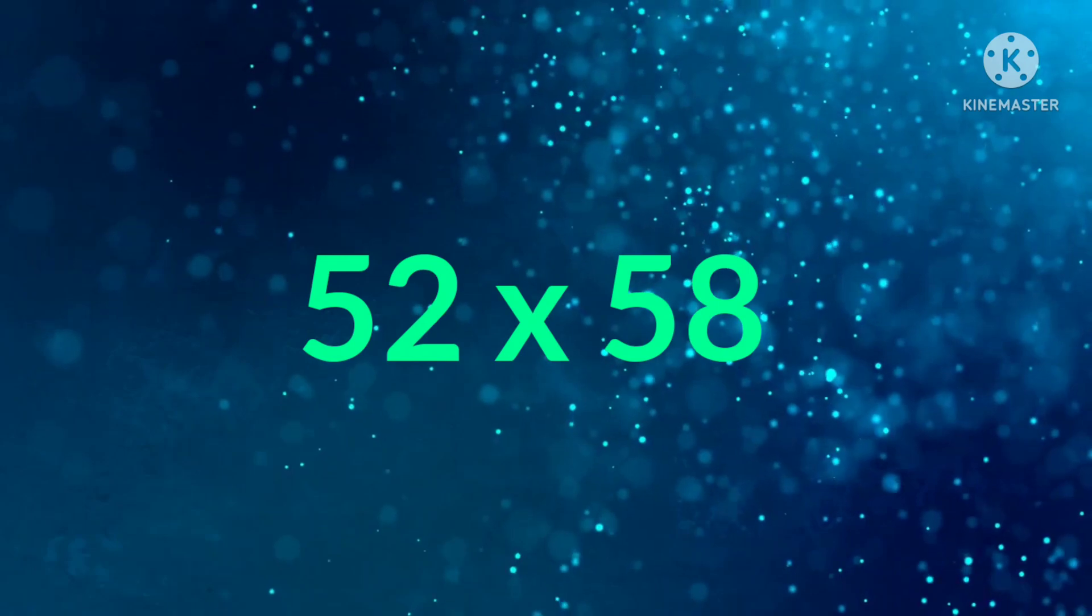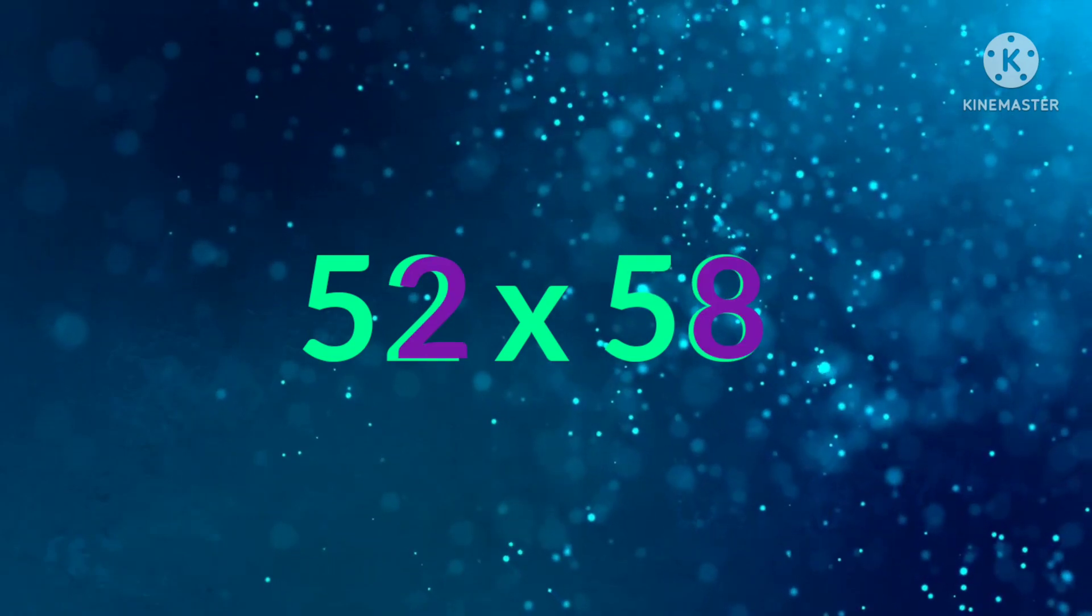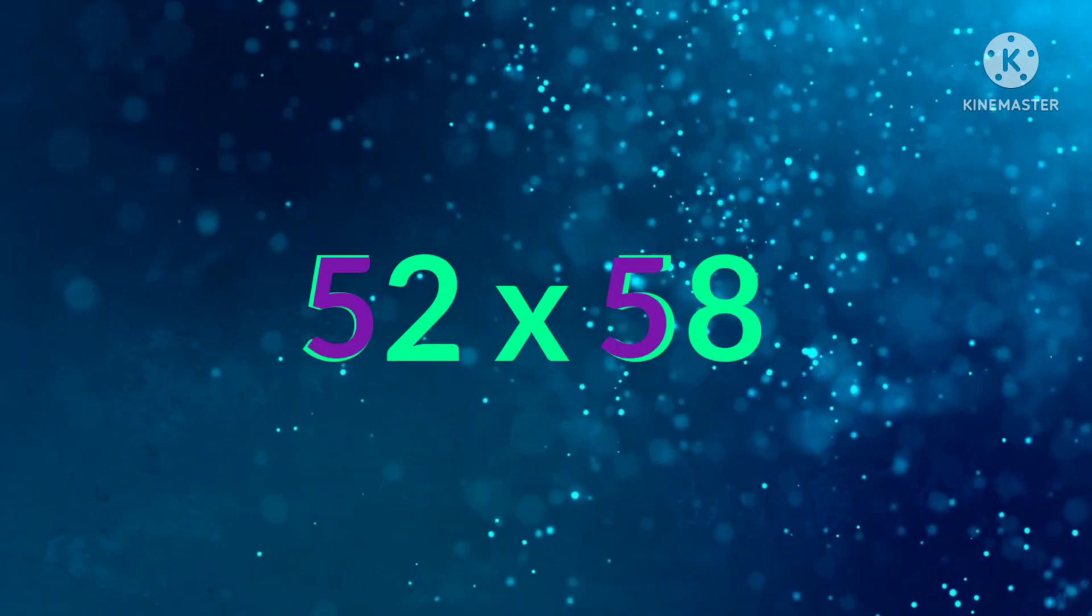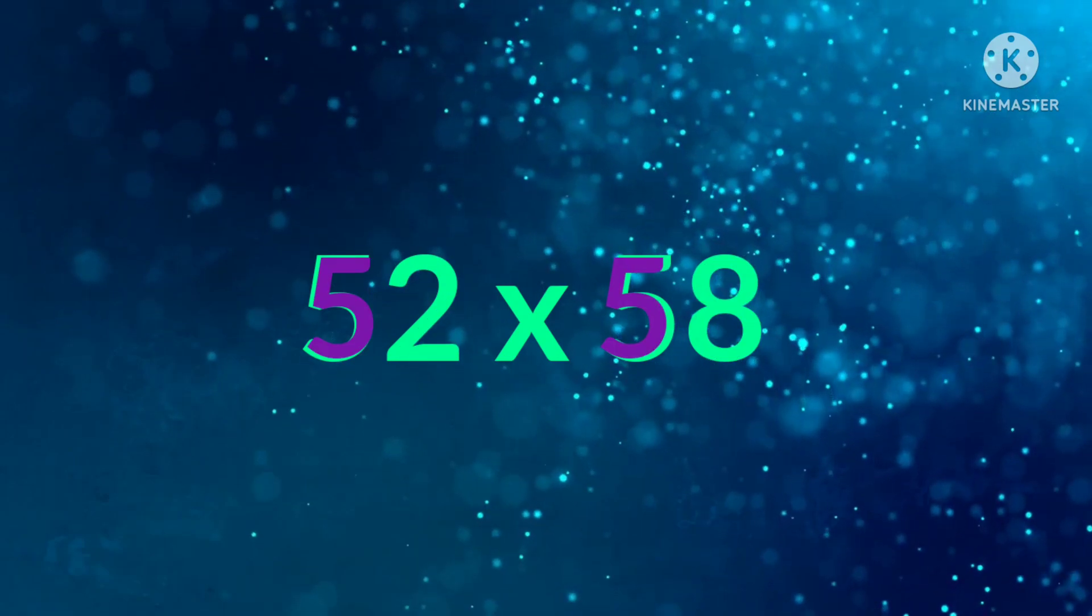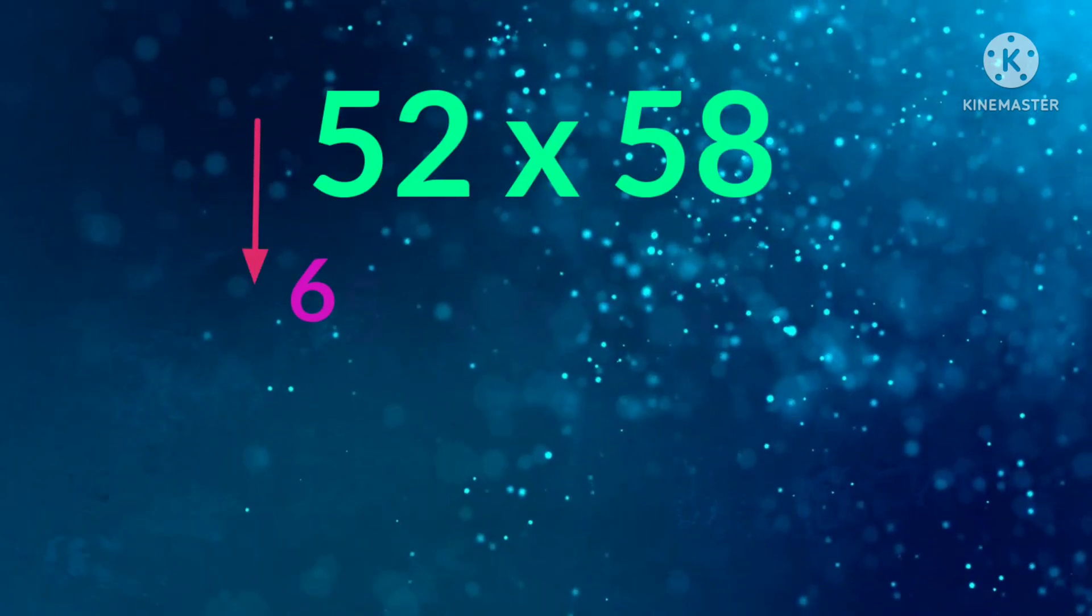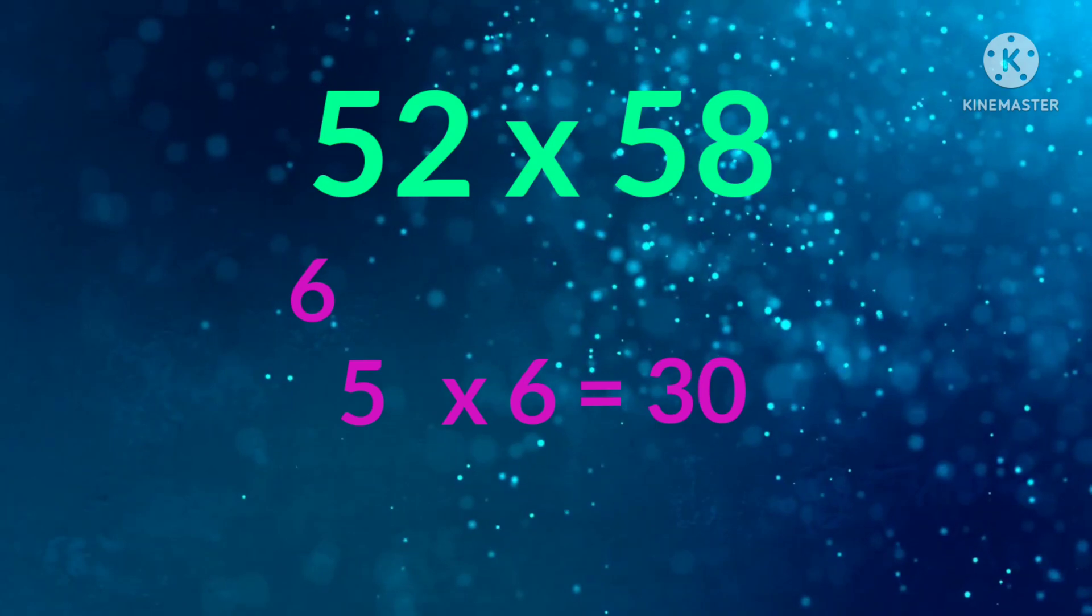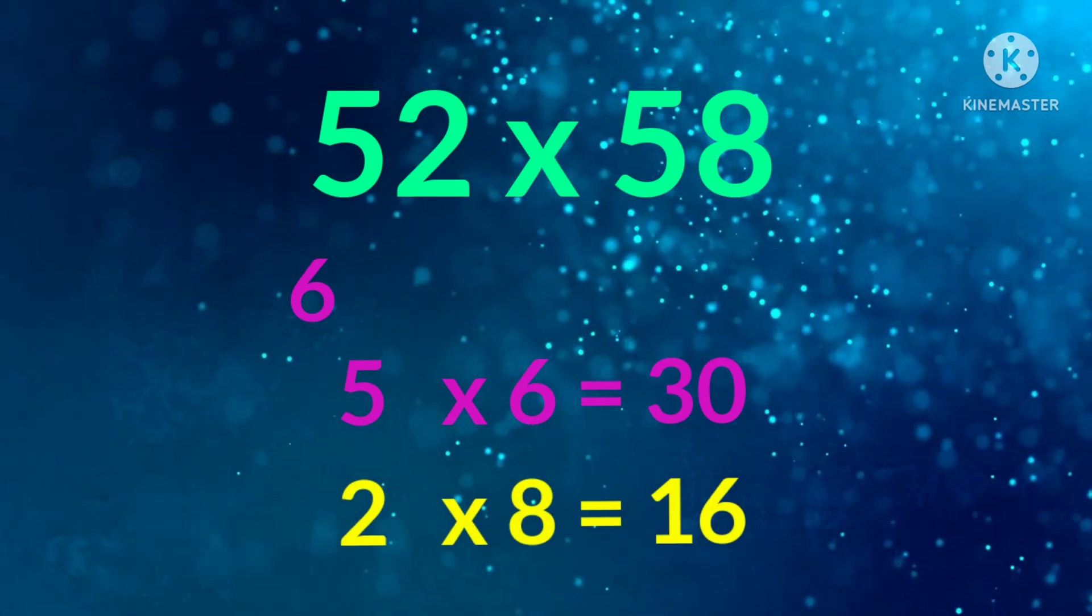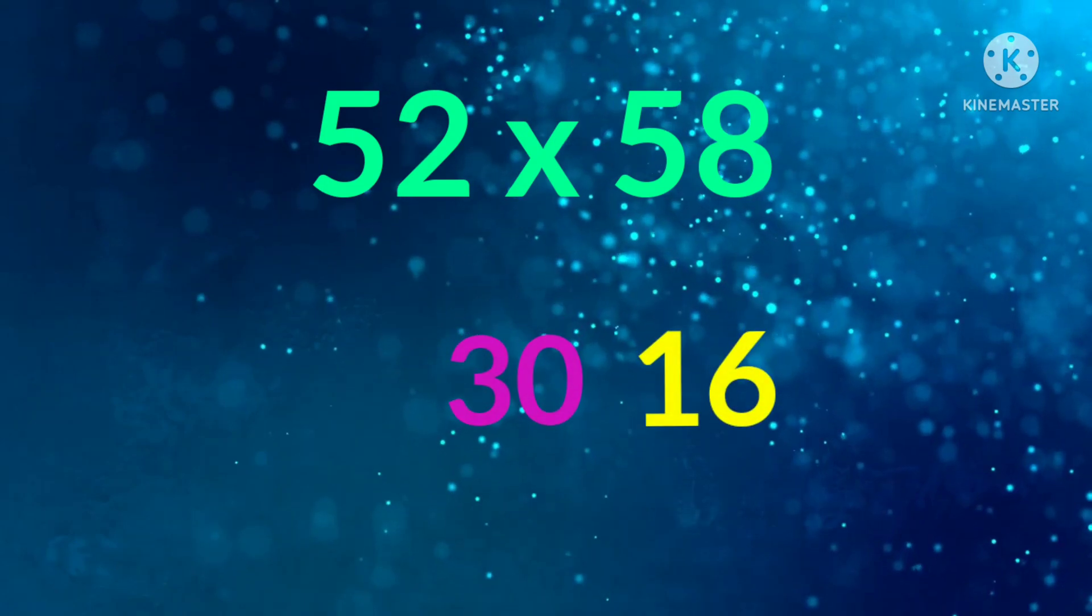Trick number 1. What is 52 into 58? Rule number 1: Unit place add up to 10. Rule number 2: Tens place digits must be same. Let's see the trick. Successor of 5 is 6, so 5 into 6 is 30. 2 into 8 is 16. Therefore, answer is 3016.